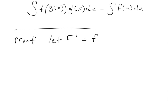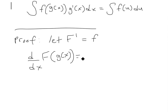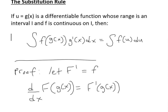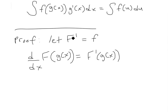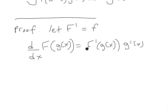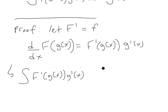We let capital F′ equal lowercase f. Then if we take the derivative d/dx of F(g(x)), by the chain rule we get F′(g(x)) times g′(x). Since the anti-derivative is the inverse of the derivative, taking the integral of F′(g(x)) times g′(x) dx gives us F(g(x)) plus C.